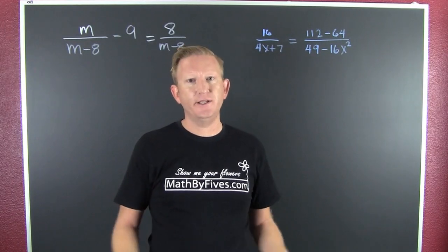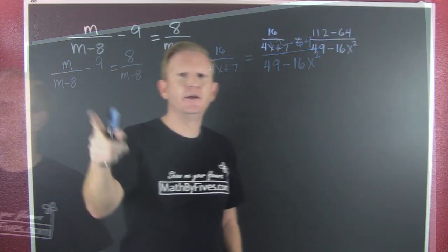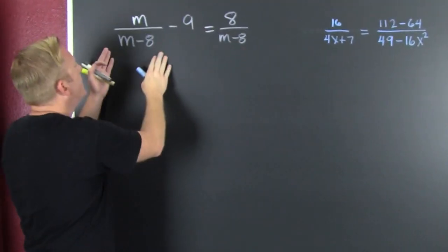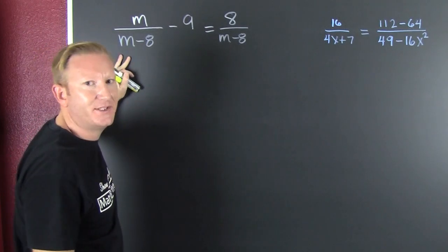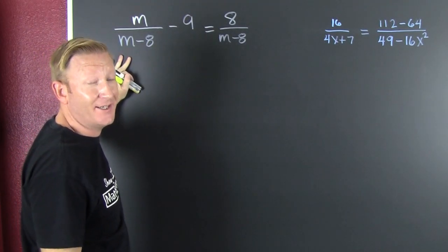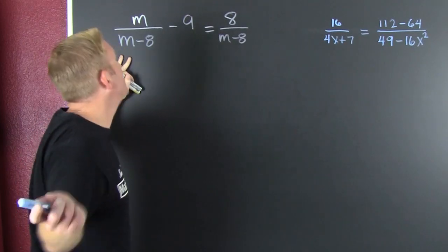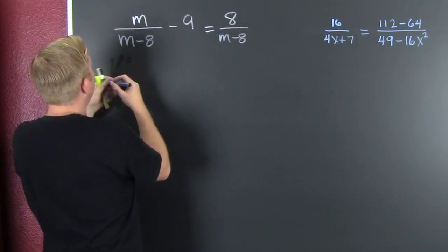We're solving rational equations. Shall we? Go to our first example. In order to solve one of these, there's a couple different methods. The one we're employing is multiplying through by a common denominator to get rid of the fractions, because I know how you feel about fractions. So here we go.